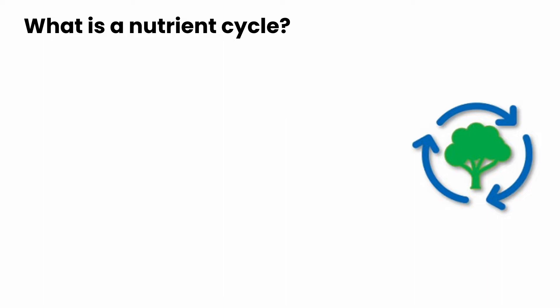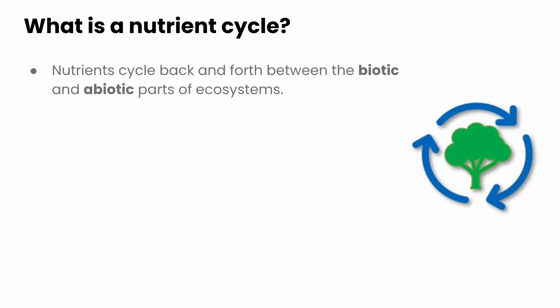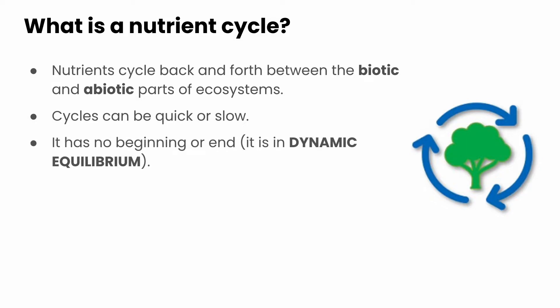So what is a nutrient cycle? Nutrient cycles happen where they go back and forth between the biotic and the abiotic parts of ecosystems. The cycles can be quick or slow, and they have no beginning or end. We would say that these cycles and ecosystems are in dynamic equilibrium.